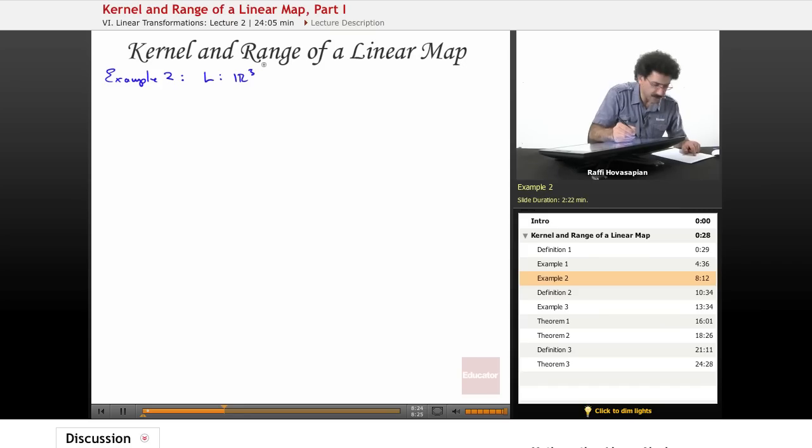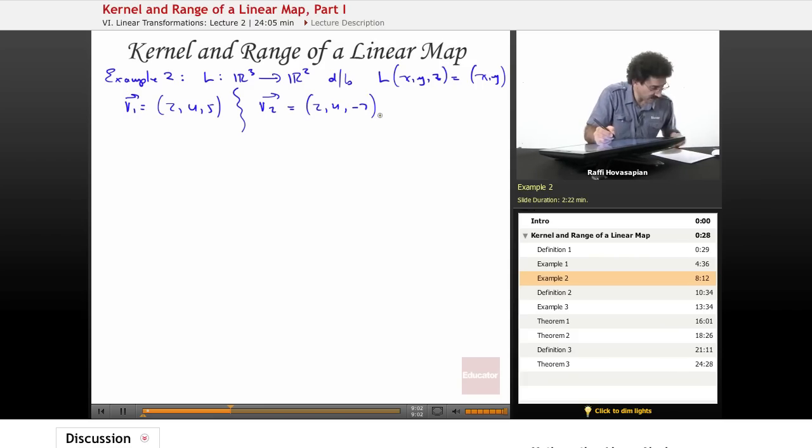L will be R³ to R², so it's a linear map, not a linear operator, and it is defined by L(x, y, z) equals (x, y). This is our projection mapping. I'll take some random x, y, z instead of variables. We'll actually use numbers. Let's let V1 equal (2, 4, 5), and we'll let our second vector equal (2, 4, -7). Now let's use V1 is not equal to V2. These two are not equal to each other.